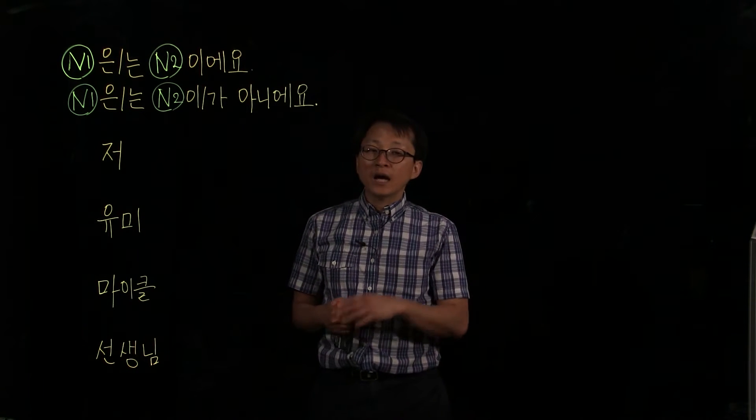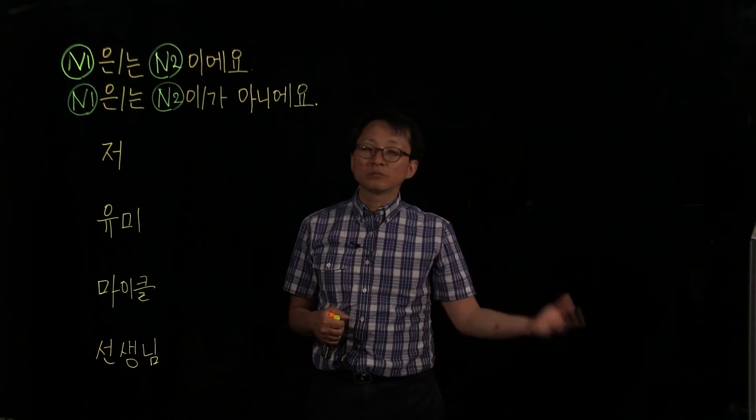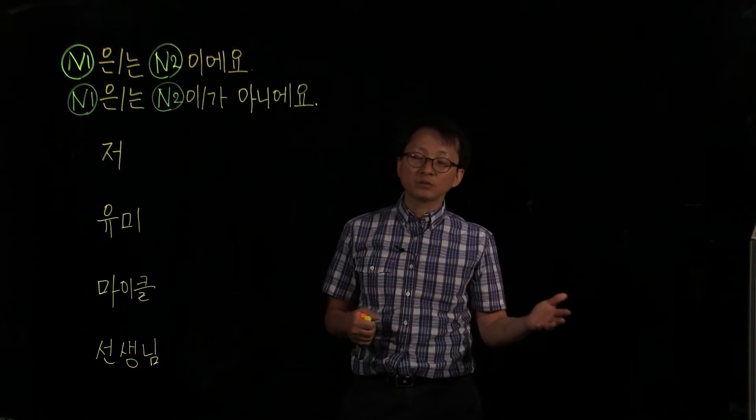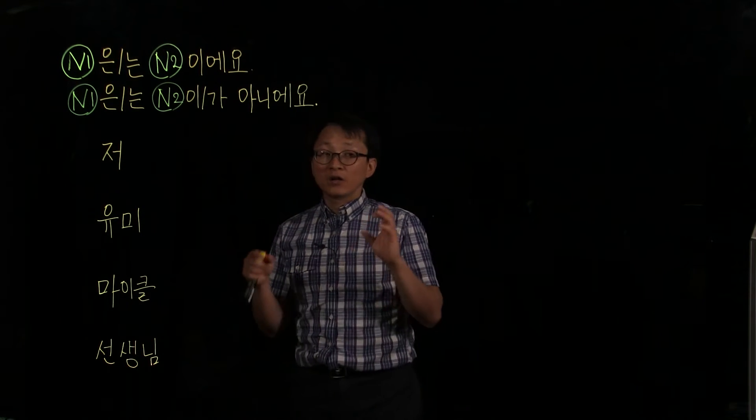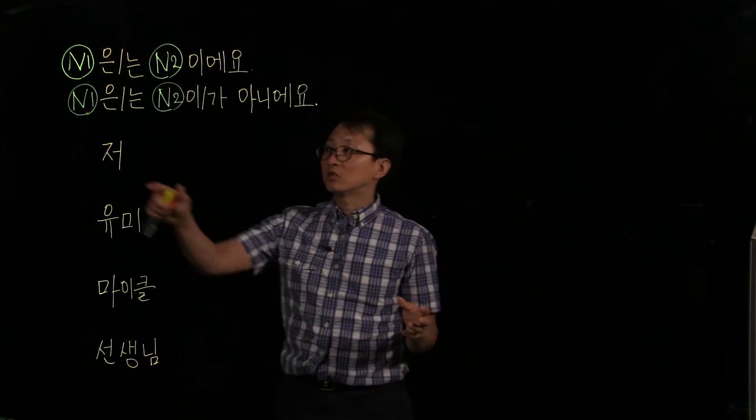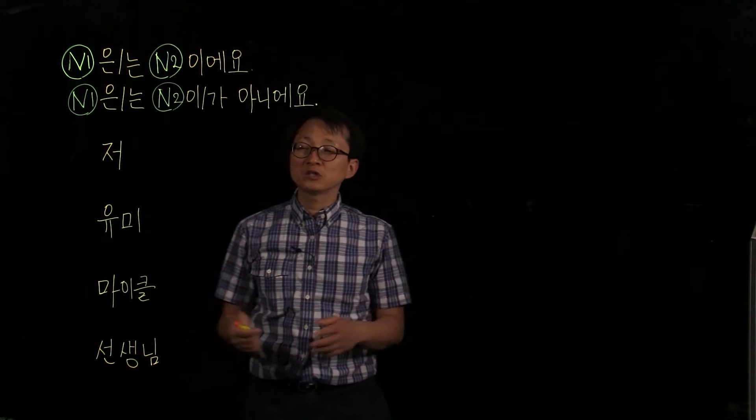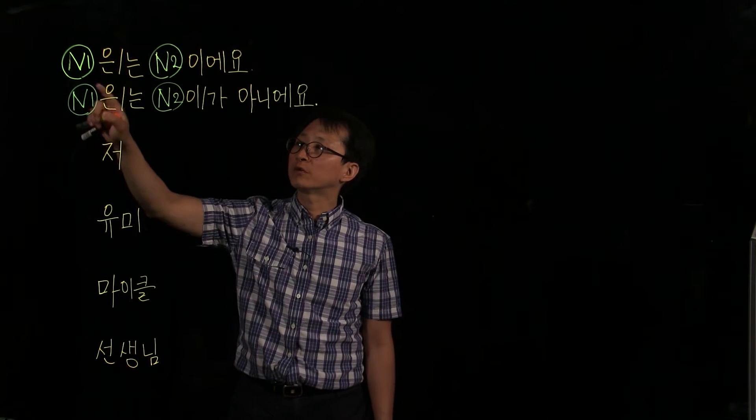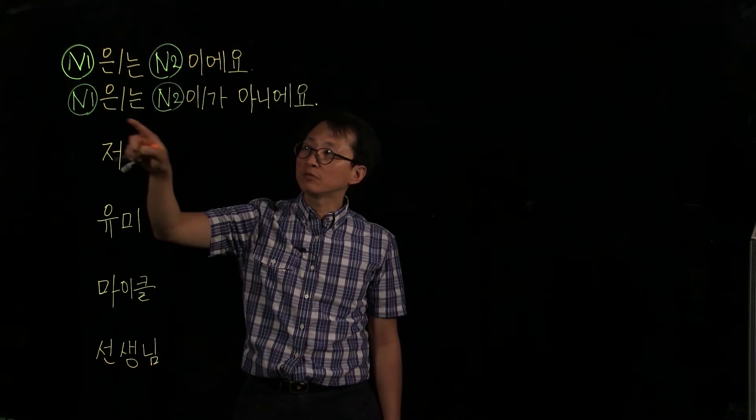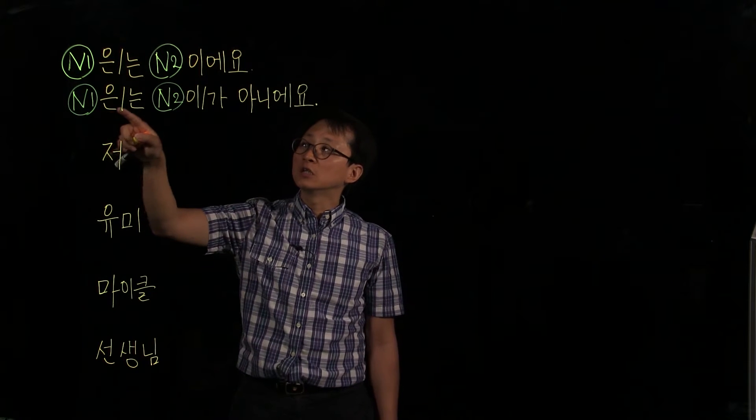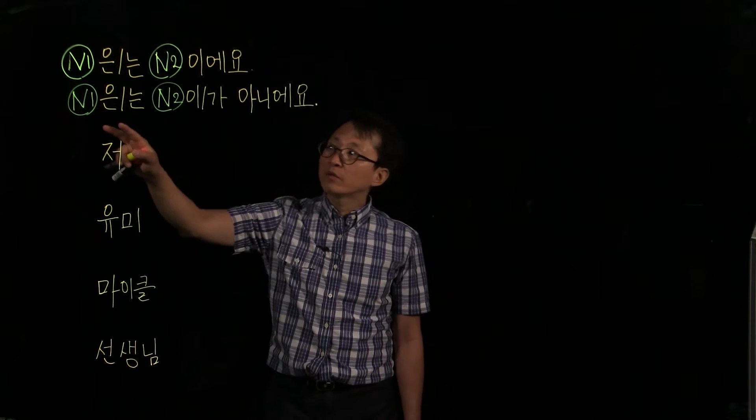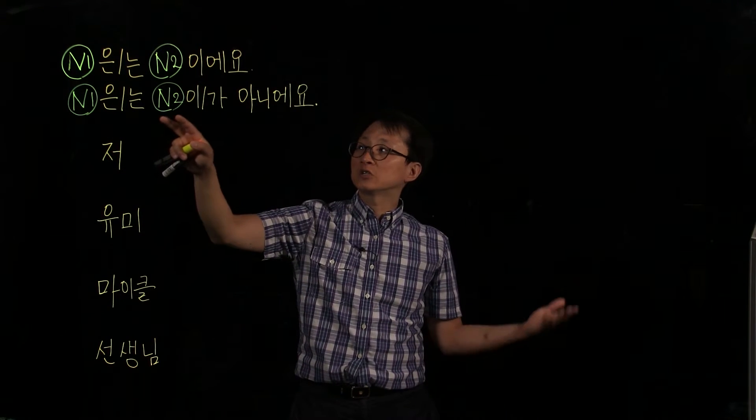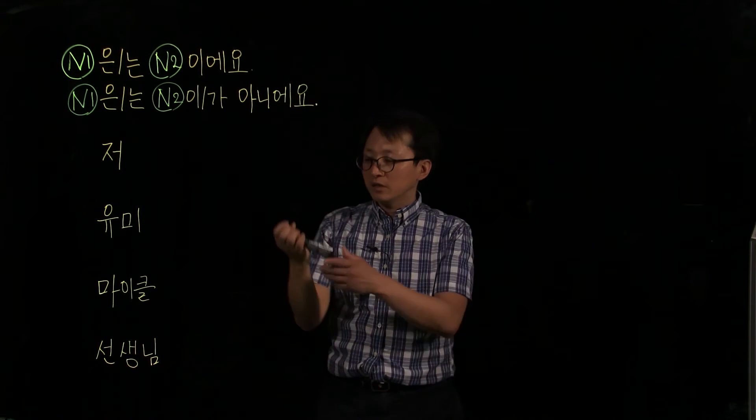Then how do we say I am not something, Michael is not something, Yumi is not something? How do we say that negatively? So this is the structure, very similar. You want to say what you want to talk about first, and followed by this, one of these forms of this particle, 은 or 는. And then you say what you are not, whom you are, he is not.